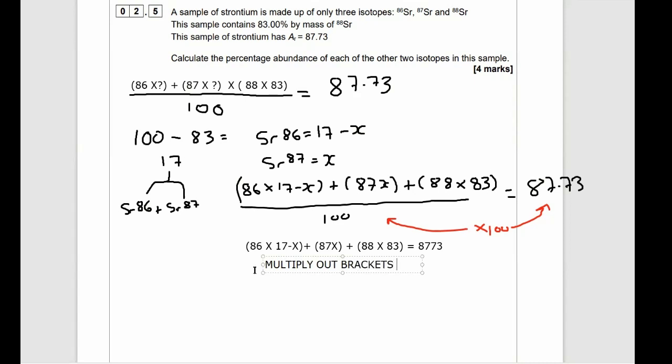So now what I want to do is multiply out each of these brackets individually to simplify this equation. So I'm going to do 86 times 17 first. And if I whack that into the calculator, it's much easier to read when I type. So we're going to get 1,462 minus 86X plus 87X. We want to then times 88 by 83. You get 7,304. And that equals 8,773.